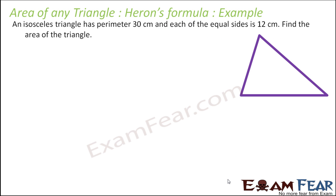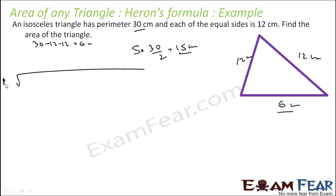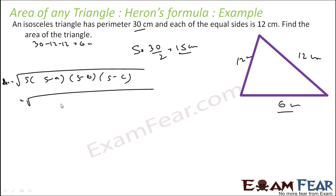One more question: an isosceles triangle has perimeter 30 cm and each equal side is 12 cm. The third side = 30 − 12 − 12 = 6 cm. The semi-perimeter s = 30 / 2 = 15 cm. Area = root of 15 × (15−12) × (15−12) × (15−6) = root of 15 × 3 × 3 × 9.